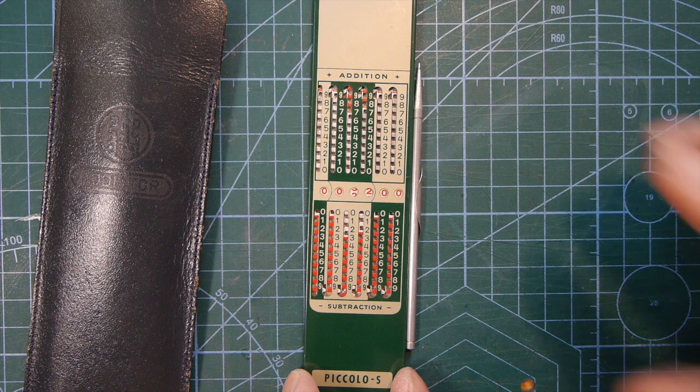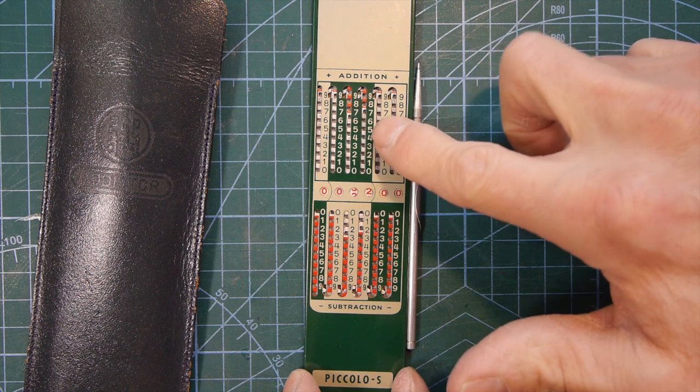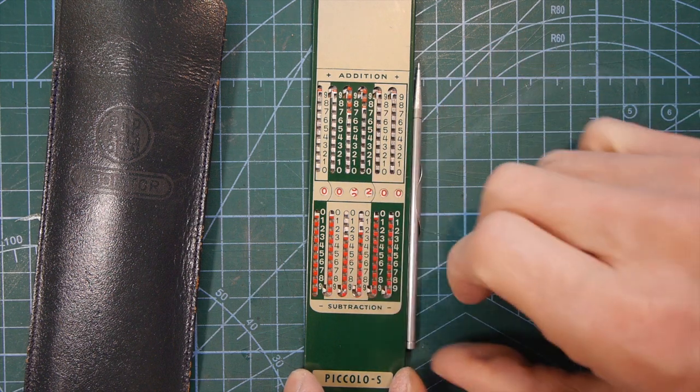So let's have a quick look at the device before we do some sample calculations. It has some numbers up here for addition and down here some windows for subtraction.